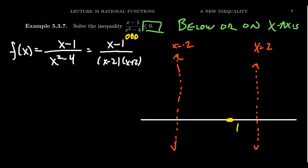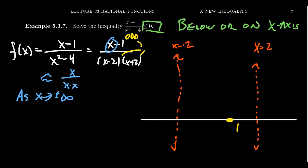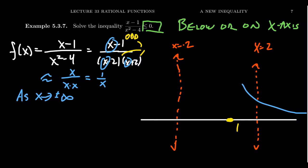Both vertical asymptote multiplicities are also odd, so we cross infinity at those points. For end behavior, as x → ±∞, the function behaves like x/x² = 1/x. So on the right-hand side it approaches 0 from above, and on the left-hand side from below. This gives us a horizontal asymptote on the x-axis. We can note that the function does cross the horizontal asymptote at the x-intercept x = 1.